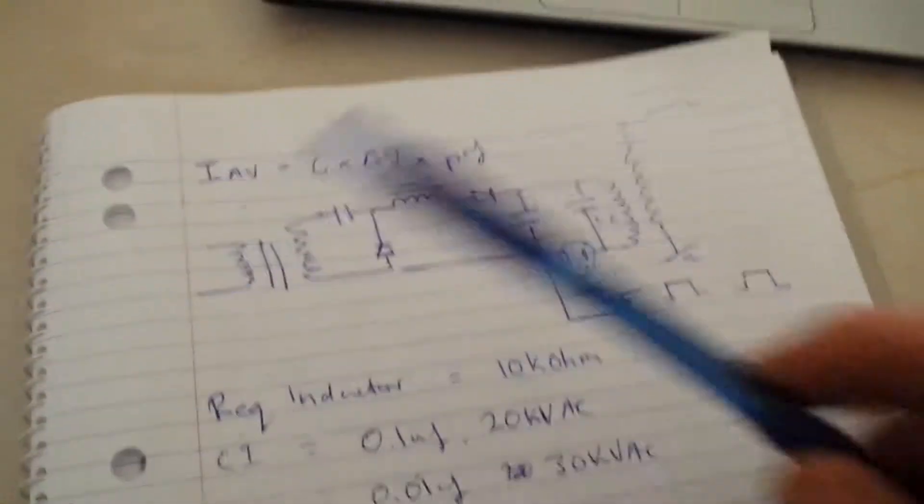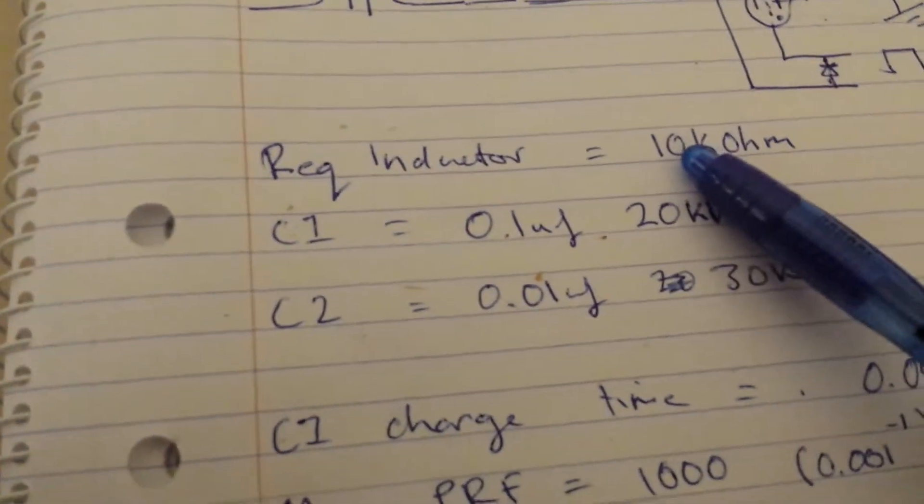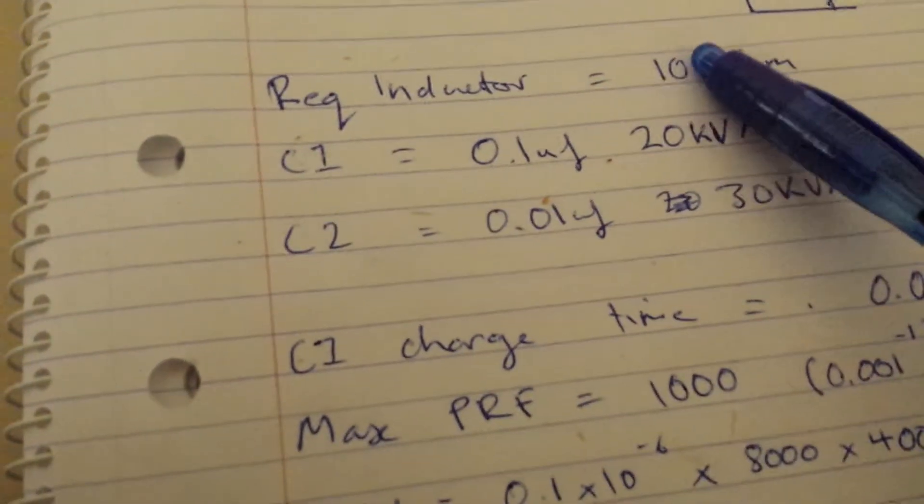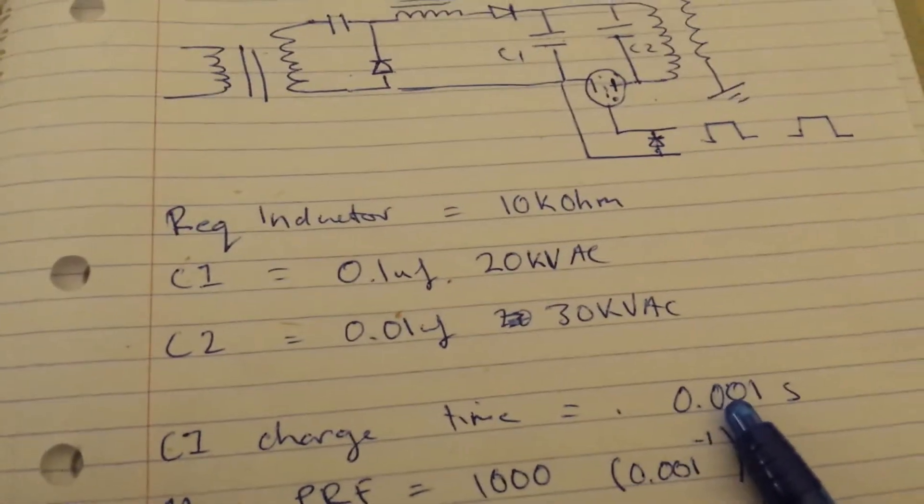So if we say that this is a 10,000 ohm resistor, which is what it effectively is, we can calculate the charge time, which is 0.01 seconds.